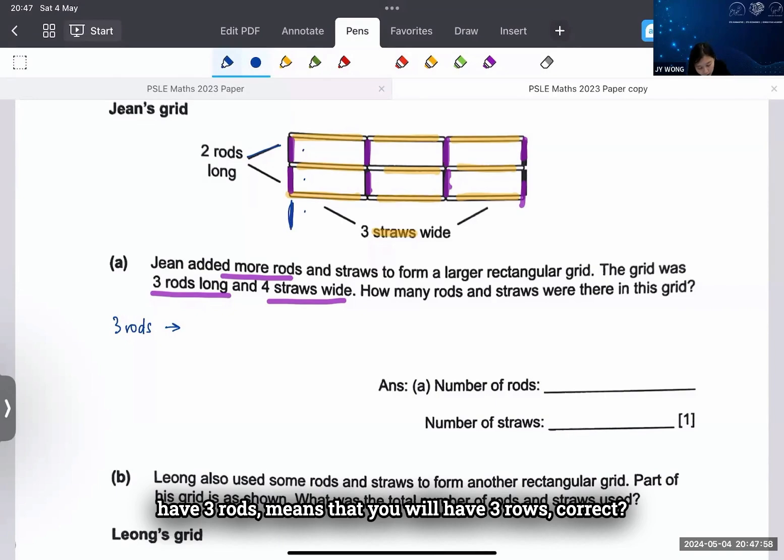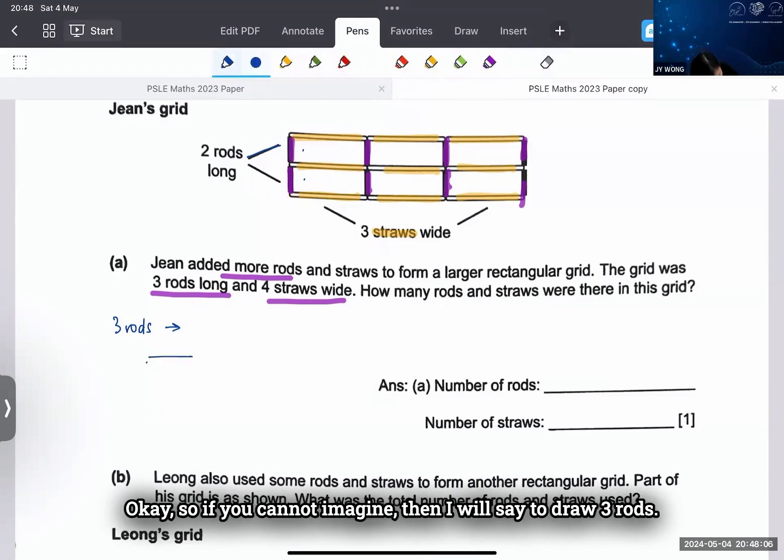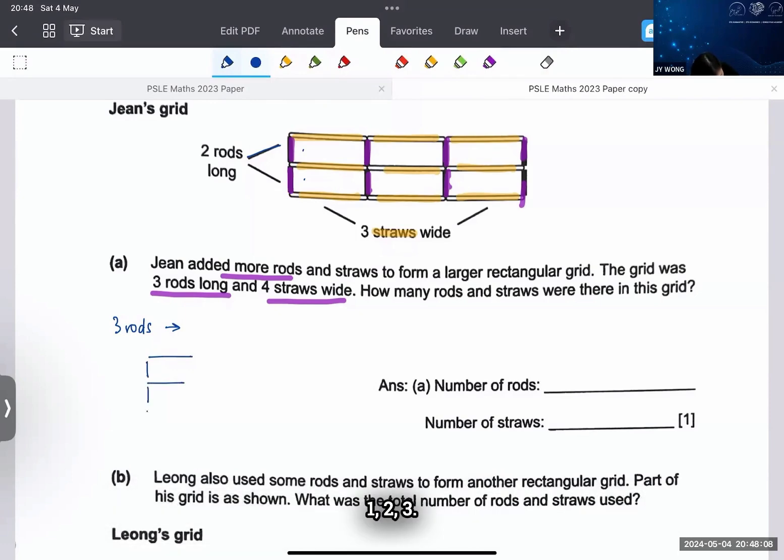Okay, so if you cannot imagine, then I will say you draw 3 rods: one, two, three. So how many straws will you see? How many rows of straws will you see? Four rows. So you will see 4 rows of straws.